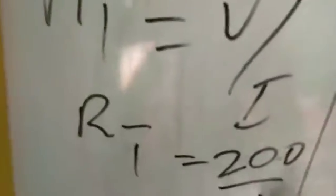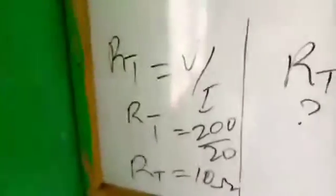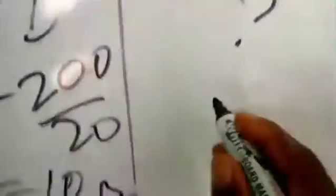So you just write Rt is equal to V over I. You see, so Rt is equal to 200 over 20, which will give us 10 ohms. I hope you can see.